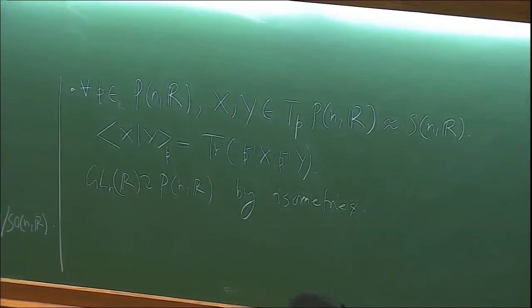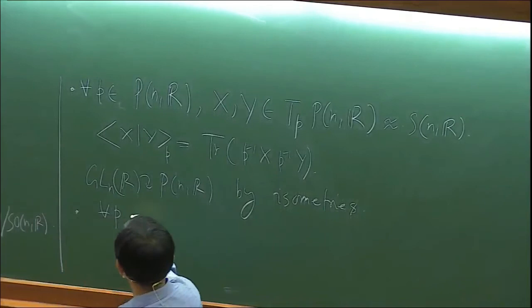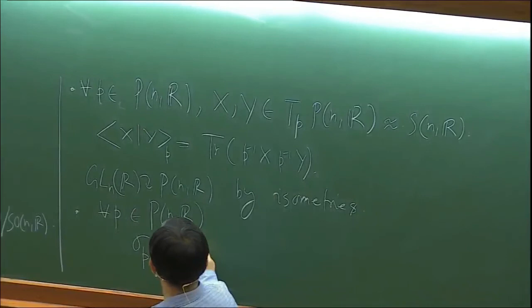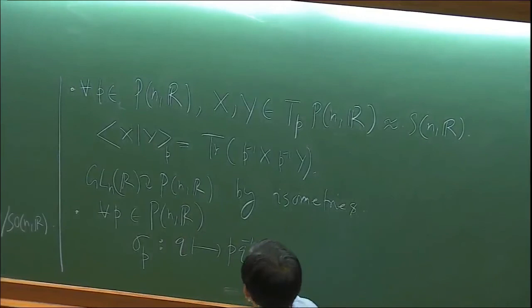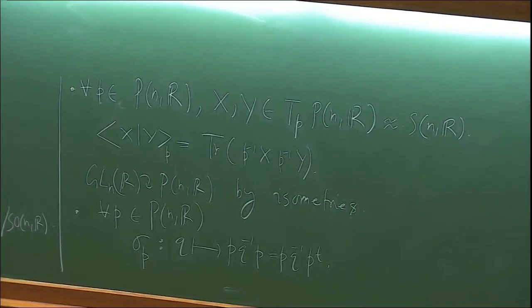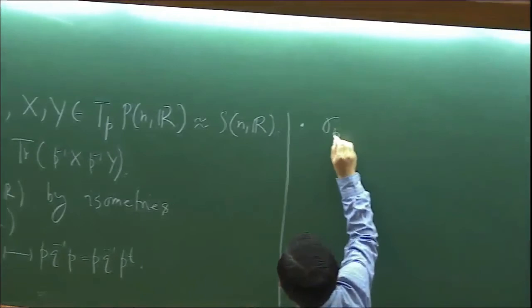We proved PNR is a symmetric space. For every point P, the map sigma_P sends any point Q to PQ-inverse P, or equivalently PQ-inverse P-transpose since P is symmetric. This is the candidate involution for every point. We checked that this is an isometry, and its derivative at P is minus the identity. Compositions of the form sigma_P composed with sigma_P1 are called transvections.